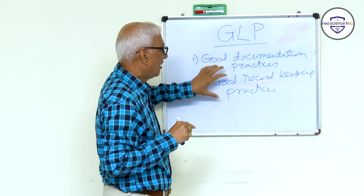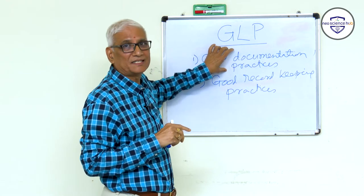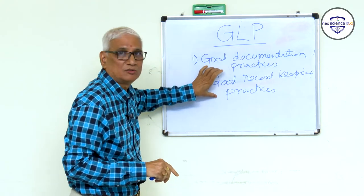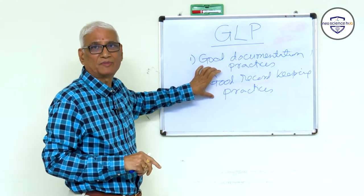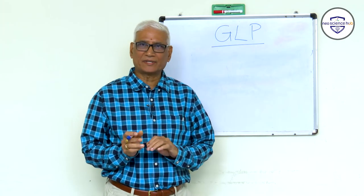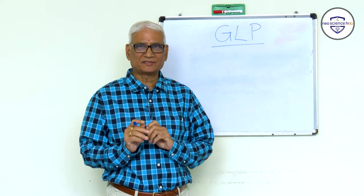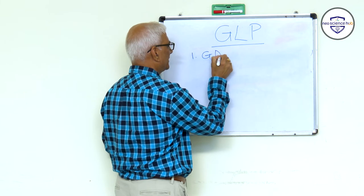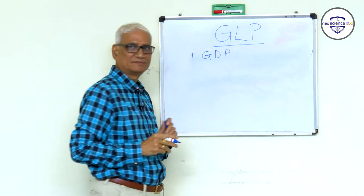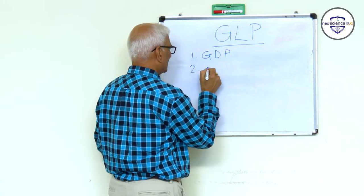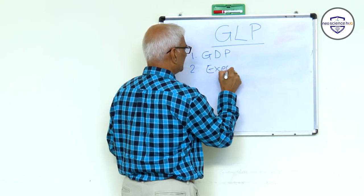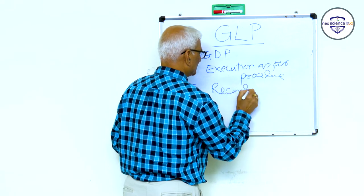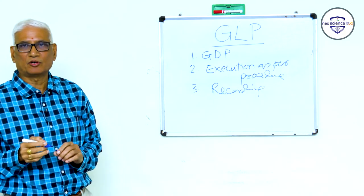When you make the documentation, you have to follow exactly the procedures or test method written in the document, and you have to record all the information you are generating. In GLP, there are three important points: one is good documentation practices, two is execution as per procedure, and three is record keeping. These are all three important things you have to do.